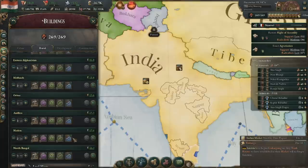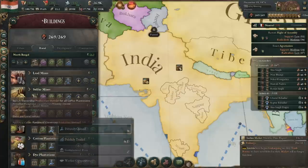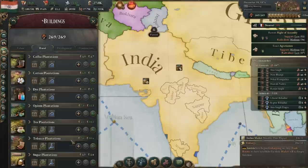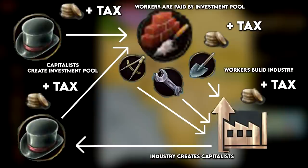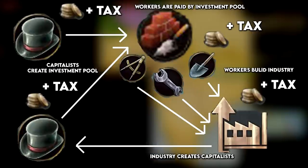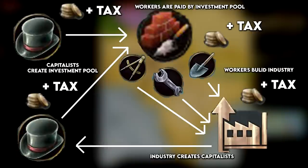The nice thing about construction sites is that they also generate jobs, which in theory get paid out from the government treasury as wages, but in reality they're being paid by the private sector thanks to our investment pool. These wages from construction come back to us in the form of taxes on those workers. This creates a loop of building industries which create successful capitalists. These capitalists fund the investment pool which we use to build things. Those things we build create more capitalists and also create wages for our citizens.